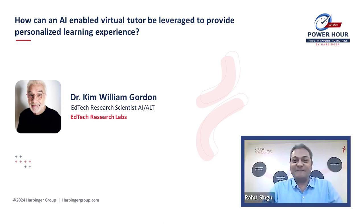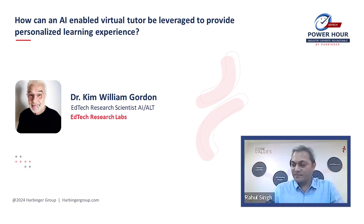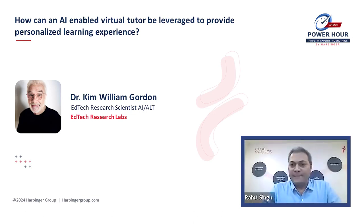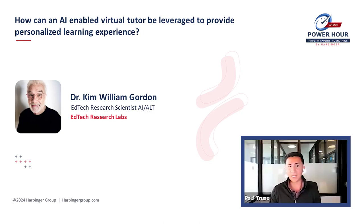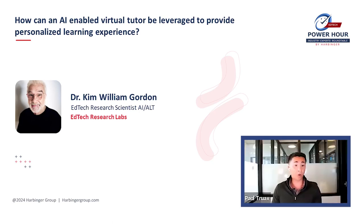For some background — we started as a person-to-person tutoring company first. There is an authenticity and a need to have a person-to-person learning environment; there's no question about that. We can train our models to mimic that connection, but at the end of the day something will be missing because we're all human. However, because of the demand for our AI capabilities, we've transitioned — while still wanting to keep that person-to-person approach because you cannot beat it. There needs to be a hybrid approach.